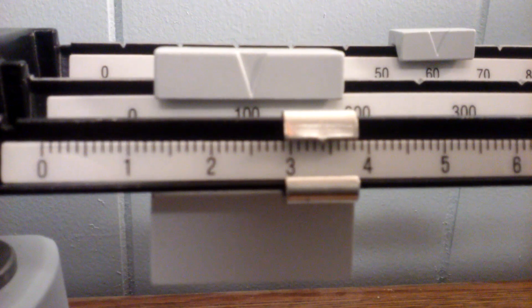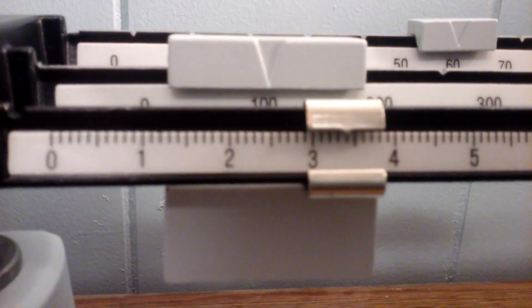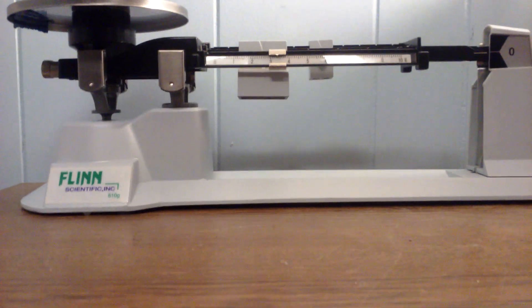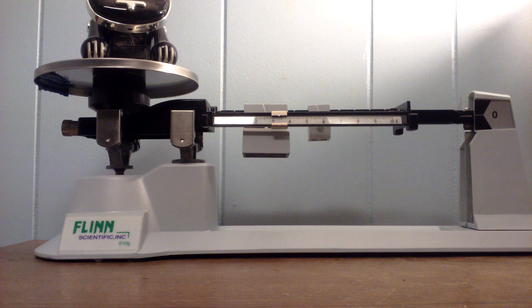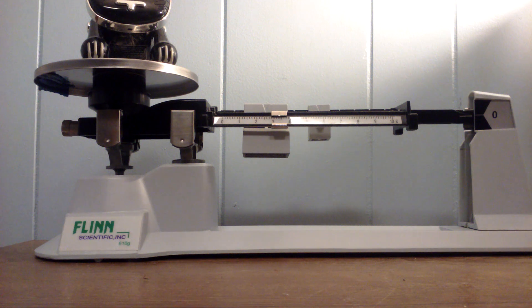So that would be 163.4 grams. Okay and so the electronic cat weighs 163.4 grams. So that's how you use a triple beam balance. It's pretty easy, it's very accurate, and it's fun. Thanks for watching. Moomoo Math uploads a new math or science video every day.